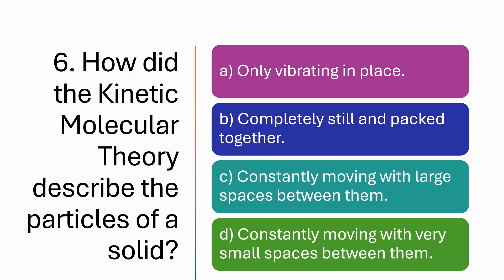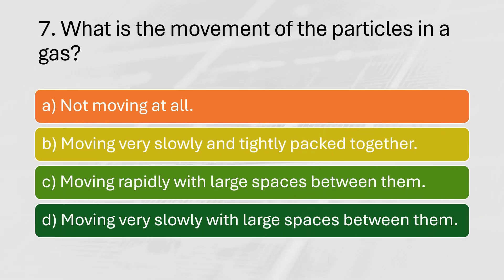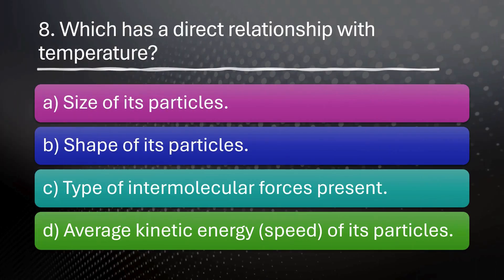What is the movement of the particles in a gas? A. Not moving at all. B. Moving very slowly and tightly packed together. C. Moving rapidly with large spaces between them. D. Moving very slowly with large spaces between them.